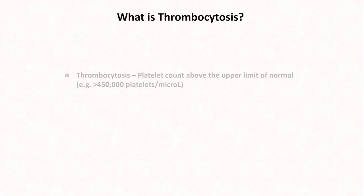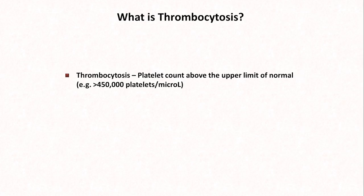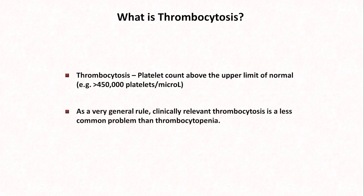Thrombocytosis is simply a state in which the platelet count is above the upper limit of normal, which most labs define as around 450,000 platelets per microliter. As with thrombocytopenia, some completely normal healthy individuals will have platelet counts above this value, but the farther it is from this cutoff, the more likely there is some underlying pathology. As a very general rule, clinically relevant thrombocytosis is a less common problem than thrombocytopenia.